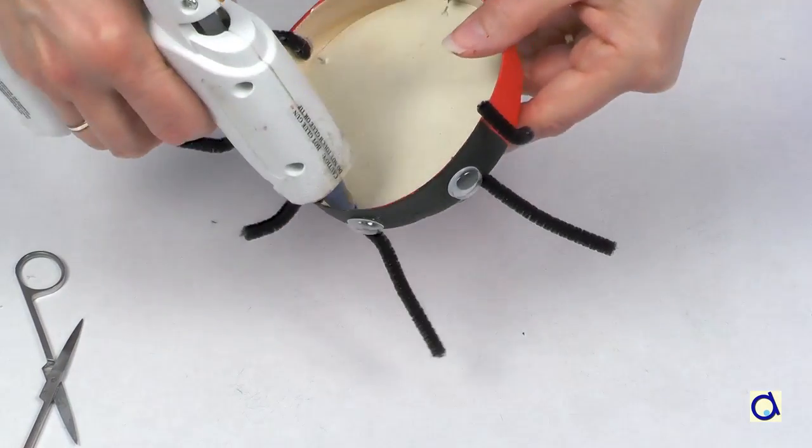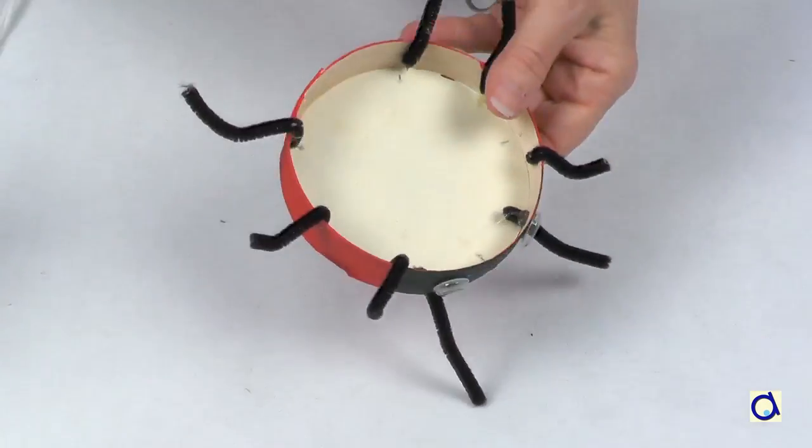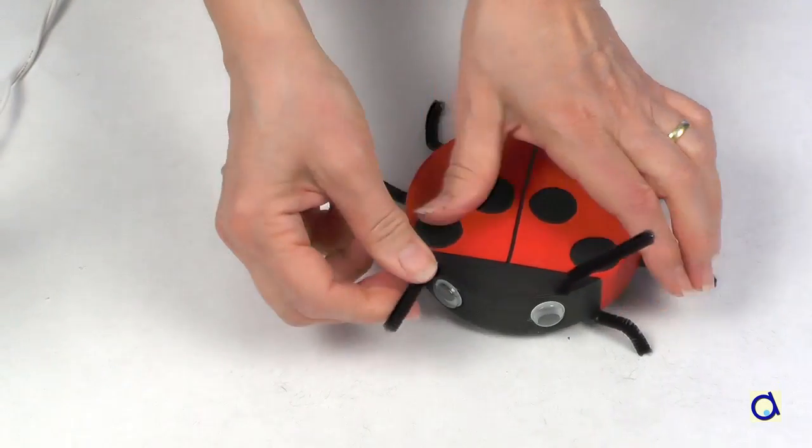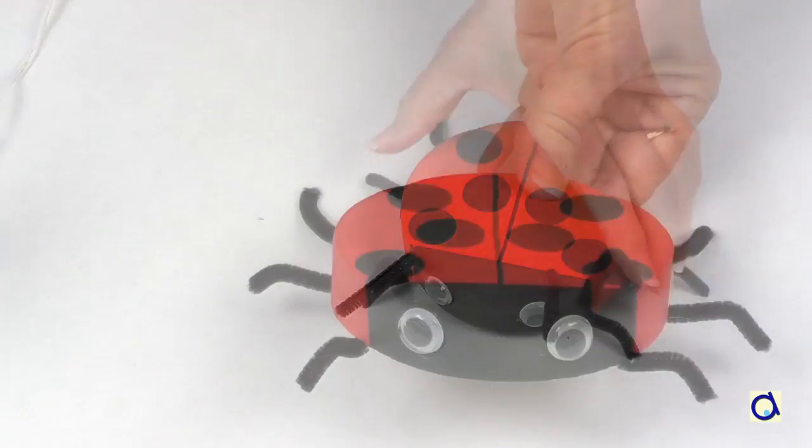Glue the ends inside the box with the glue gun. You can leave the antennas pointing up or fold them. And now your ladybug is ready!